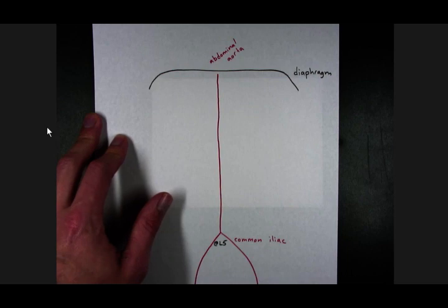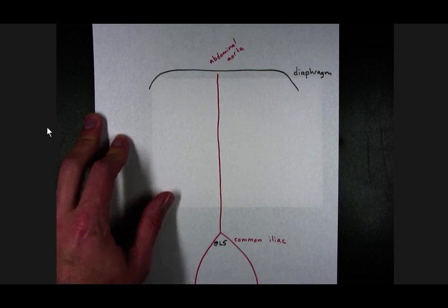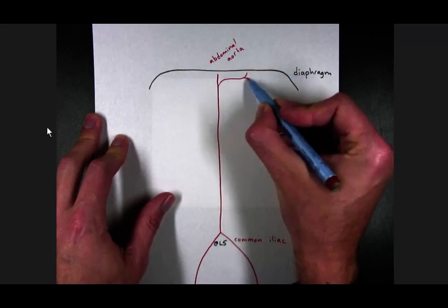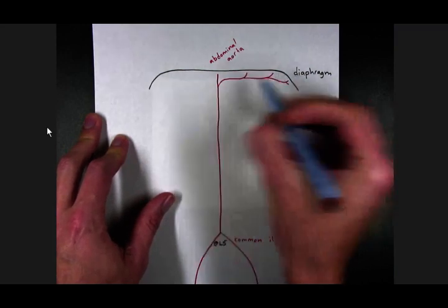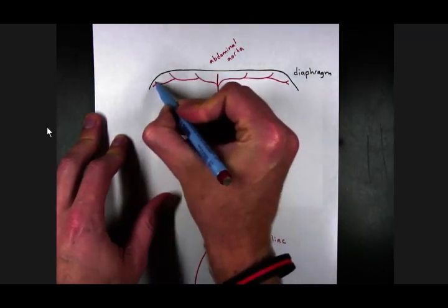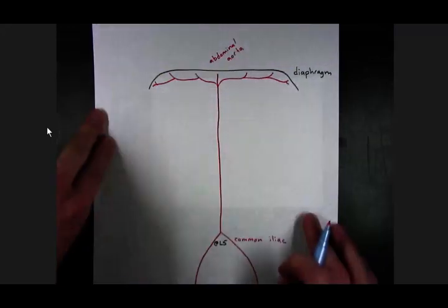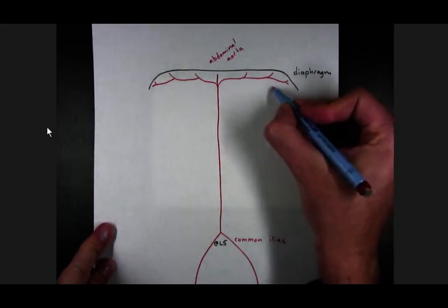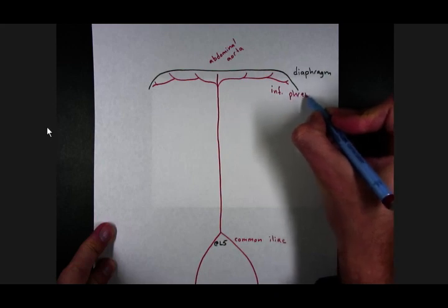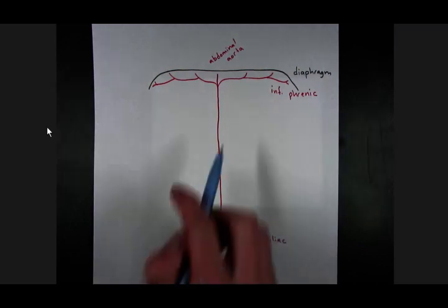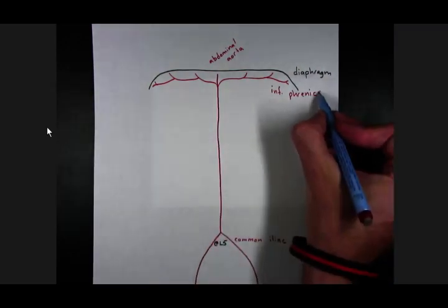A very proximal branch of the abdominal aorta is the inferior phrenic artery, supplying blood to the inferior aspect of the diaphragm. Bilateral, there are two inferior phrenic arteries. So I'll just put inferior phrenics.